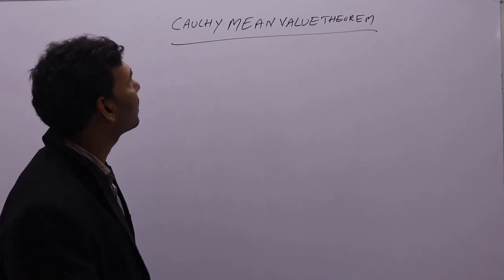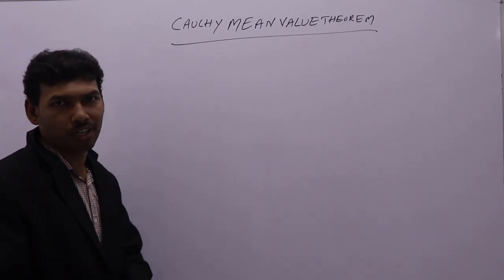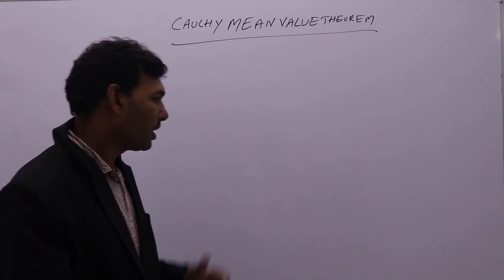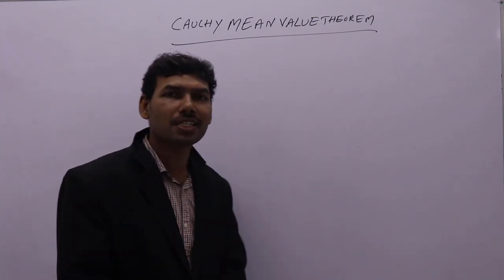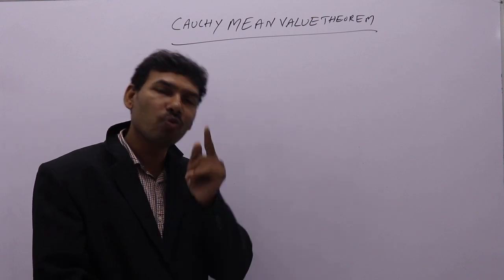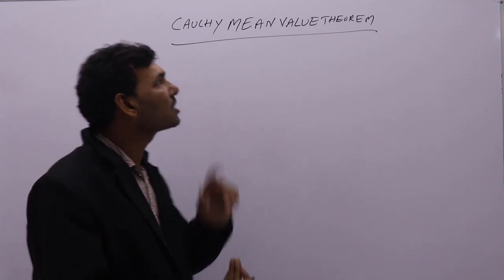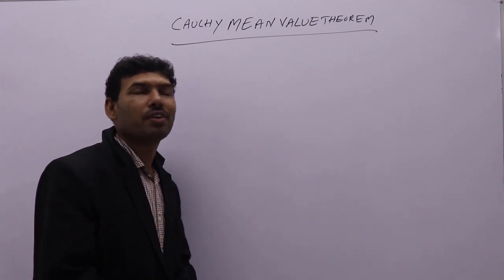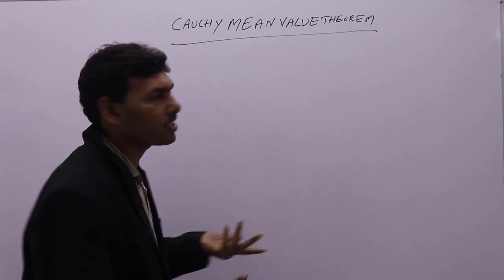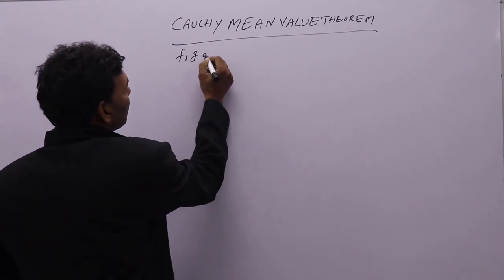Third mean value theorem, that is Cauchy mean value theorem. So what does Cauchy mean value theorem say? Till now we discussed Rolle's theorem and Lagrange's theorem. They were defined on one function. But this is the only mean value theorem which is defined on two functions, like f and g are two functions.